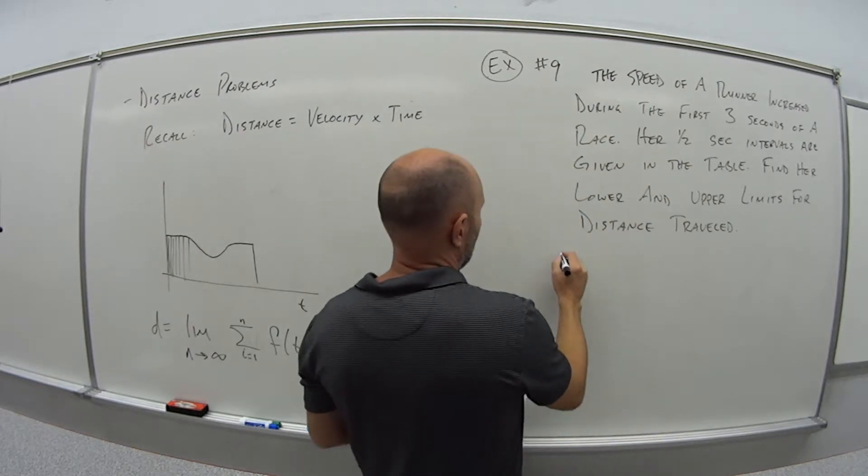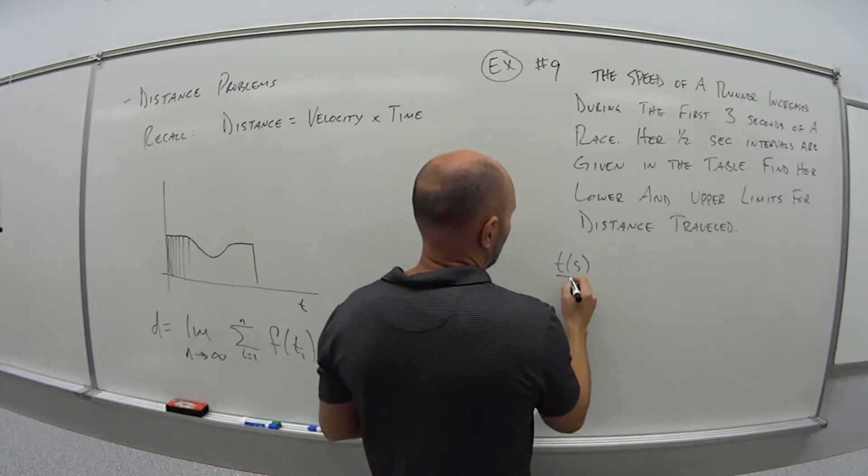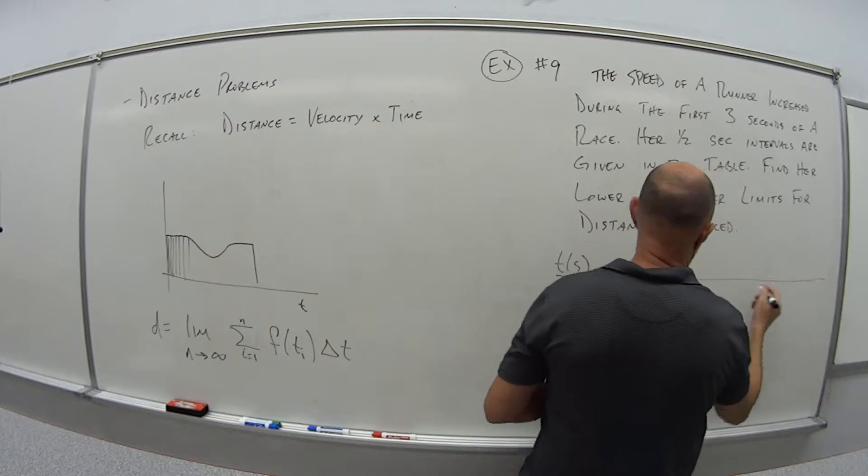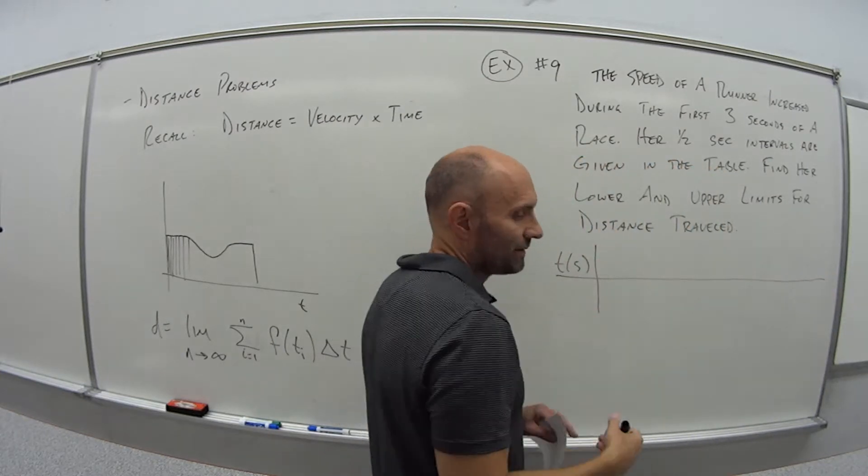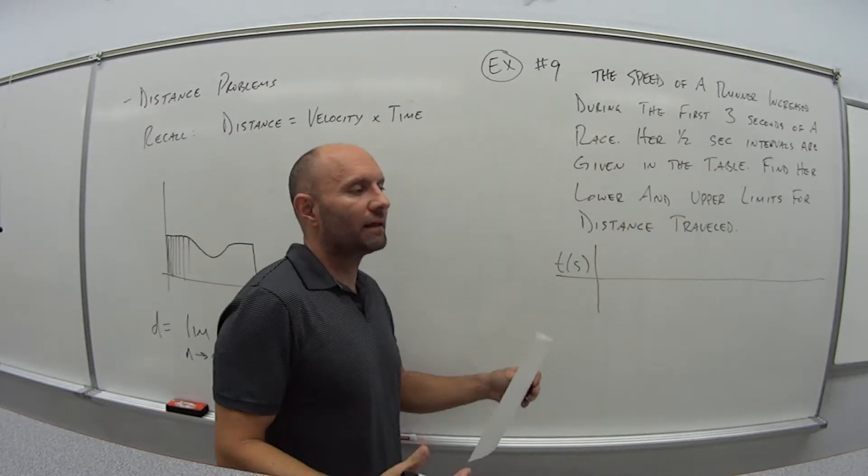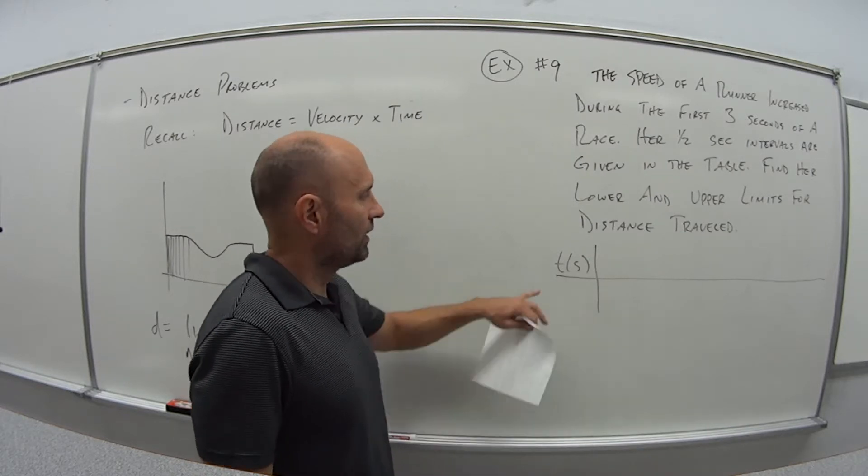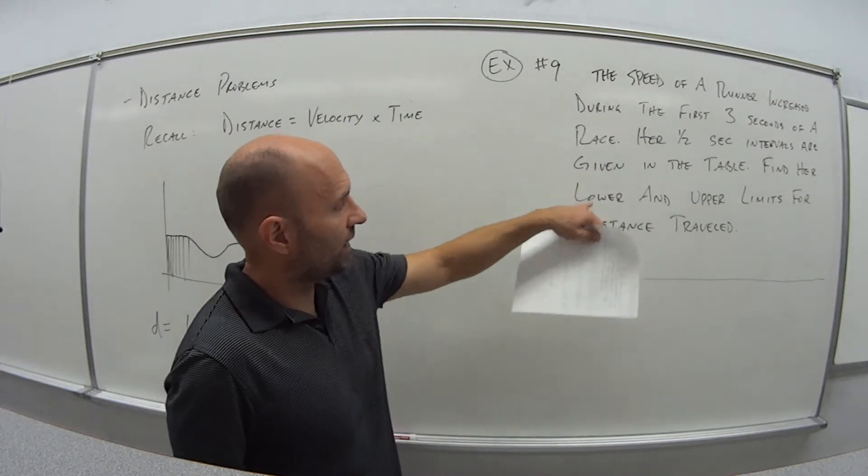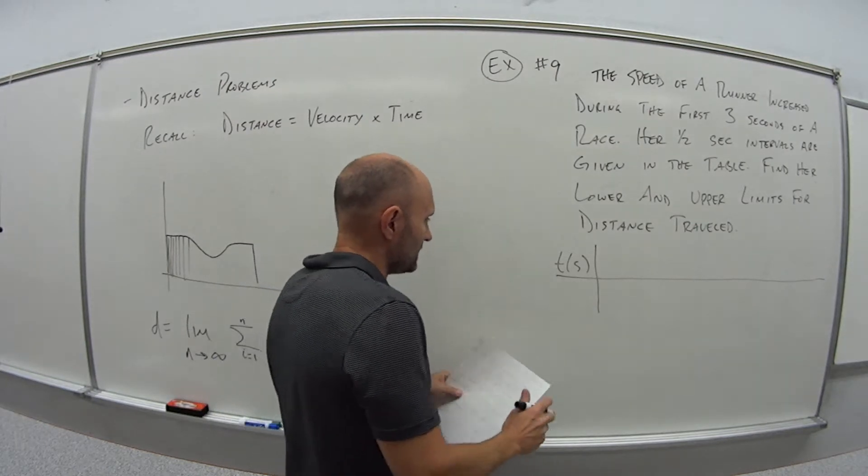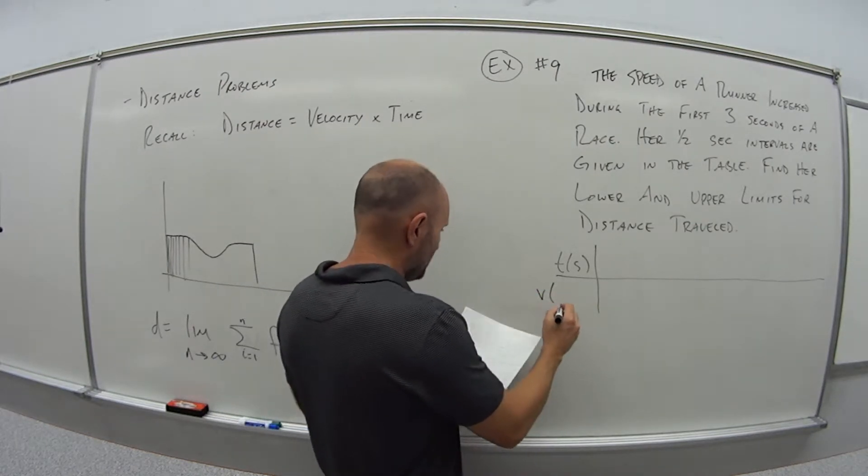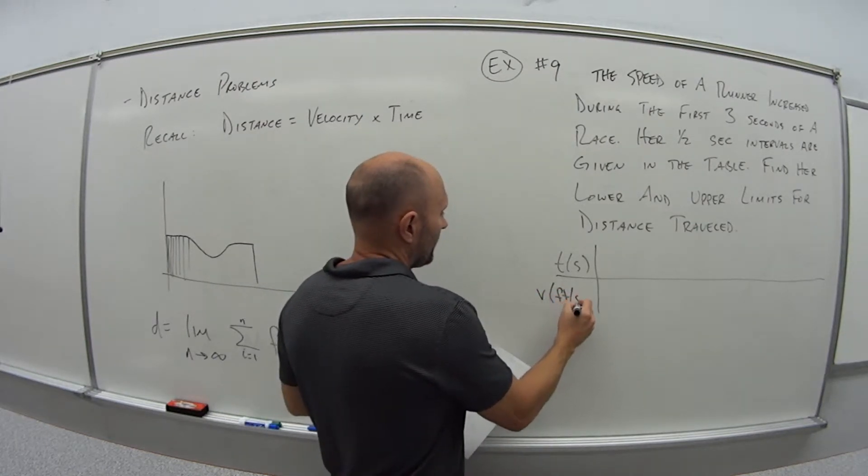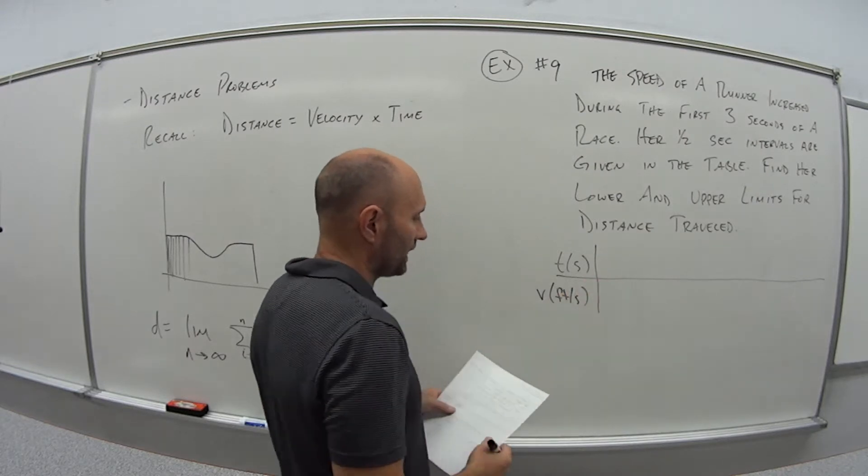And the table looks like the following. So our time in seconds. And one thing to be careful with here is make sure that time and our velocity are using the same units. So if our time is given in seconds, we need the velocity in seconds. So our velocity is feet per second in this case. So because they're both seconds, that's fine.